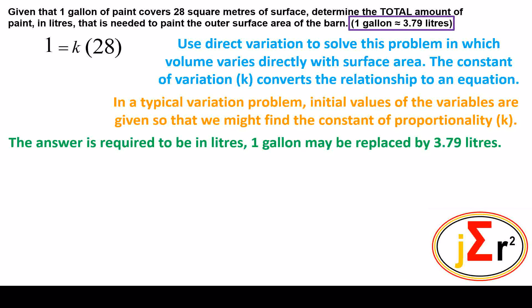The answer is required to be in liters, and we have the relationship between the gallon and liters. We may therefore substitute 3.79 liters in the space of one gallon, because our answer is required to be in liters. Determine the total amount of paint in liters. That is why converting our volume of paint to liters is appropriate in this particular case.